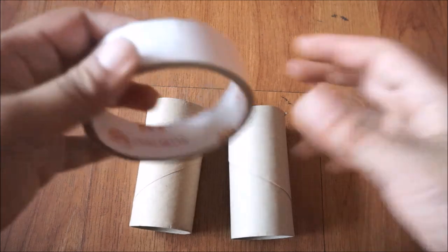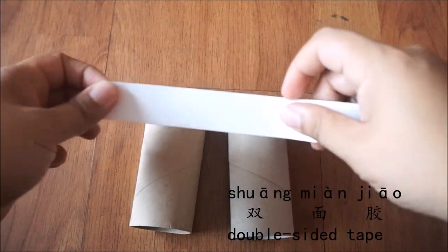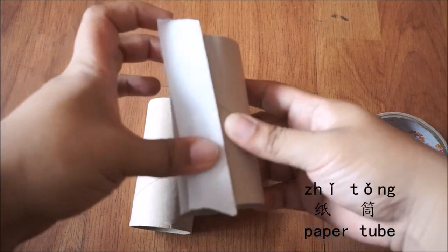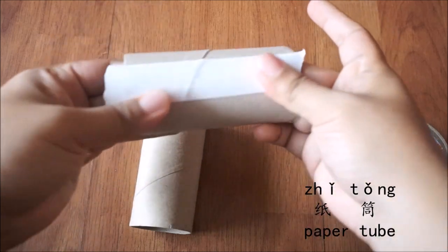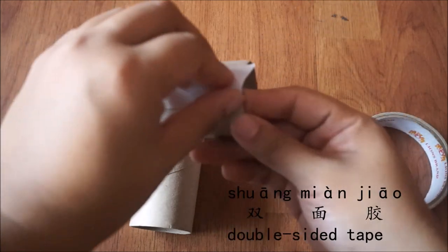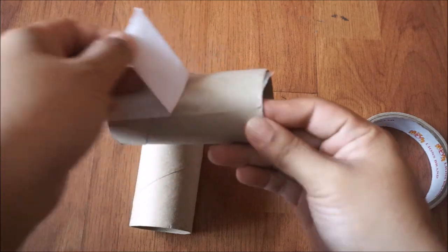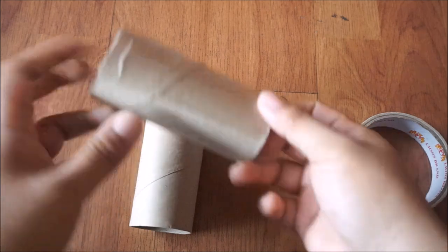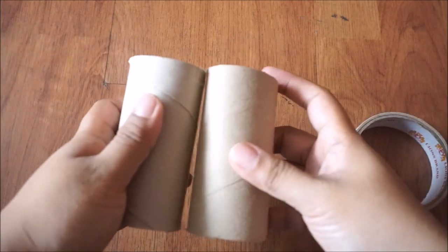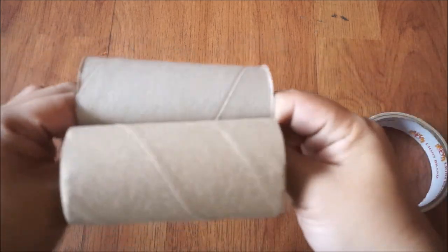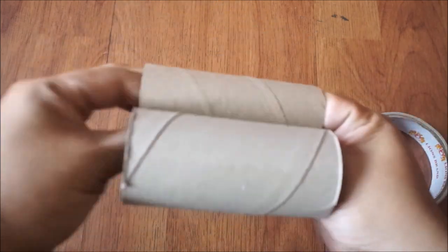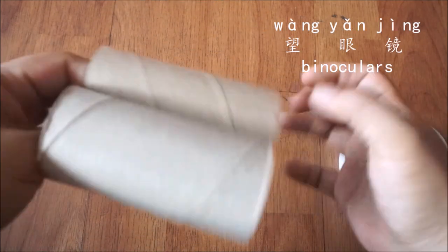Before we go to our arts and craft activity, let's get some 双面胶, just like this, and we're going to stick it on our 纸筒. Let's peel the 双面胶 and put the excess on this side. Let's stick it together and press it so that it will stick together. Ta-da! This is our 望眼镜 (binoculars).